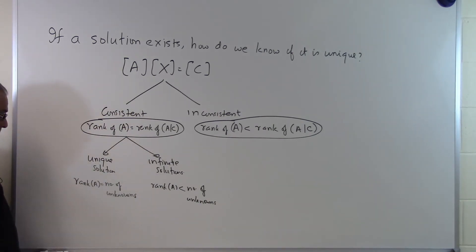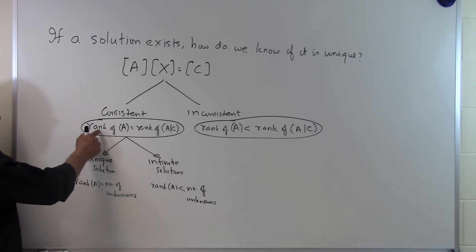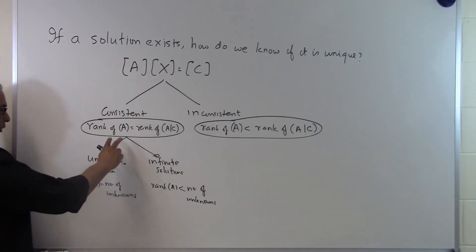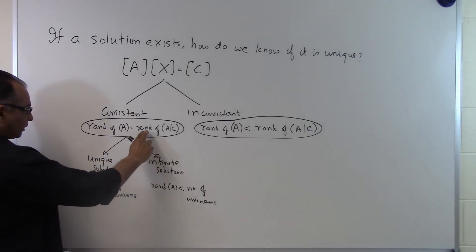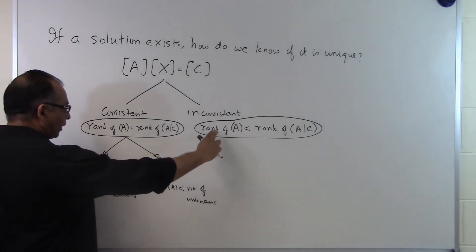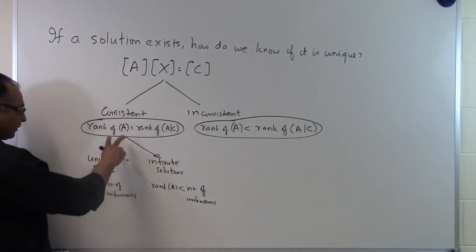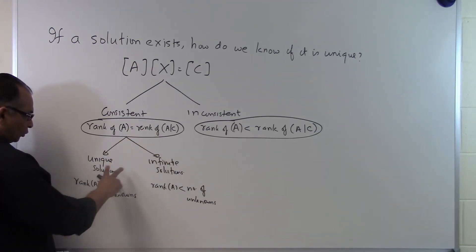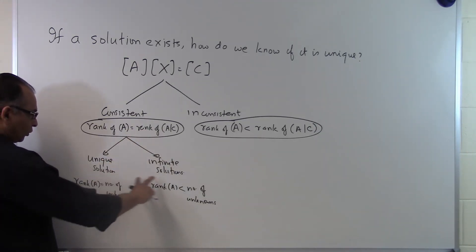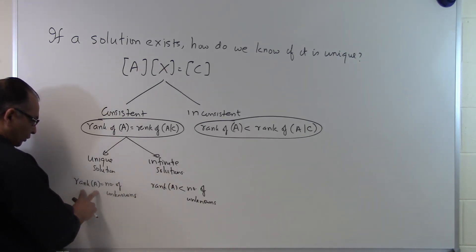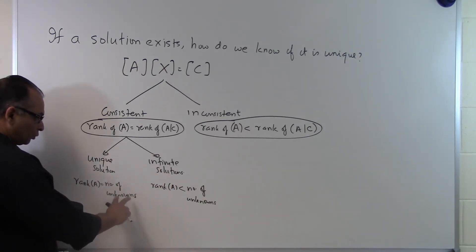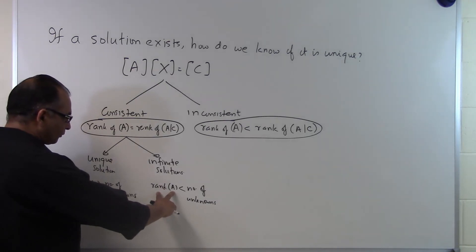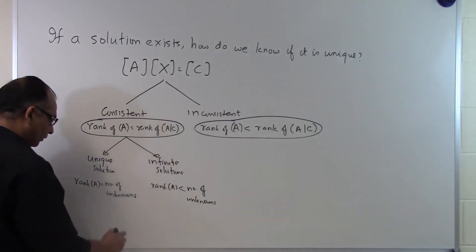Those are the possibilities we have to look at: once we establish a system consistent or inconsistent by checking whether the rank of A equals the rank of the augmented matrix or is less than it; and to distinguish between a unique solution or infinite solutions, we check if the rank of the coefficient matrix matches the number of unknowns or is less than the number of unknowns.